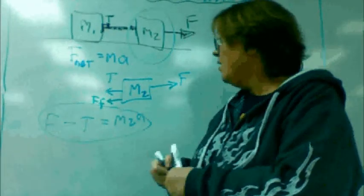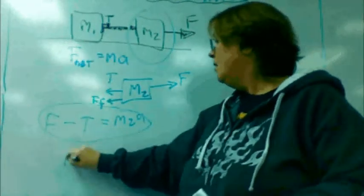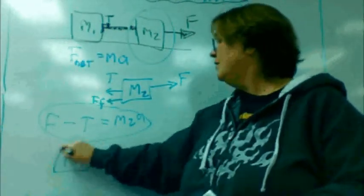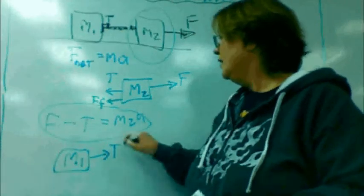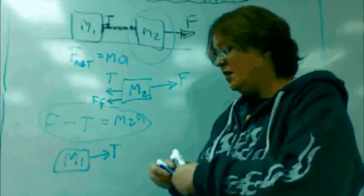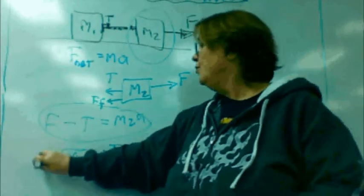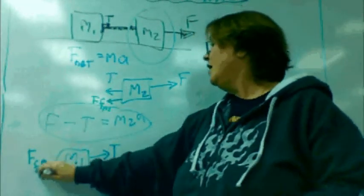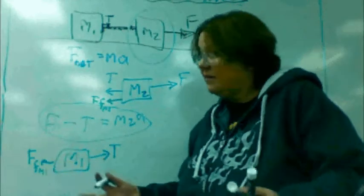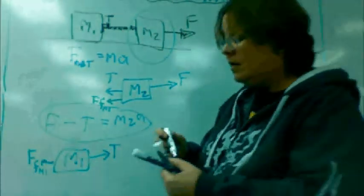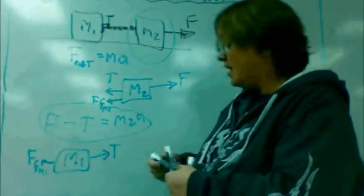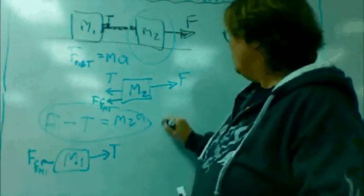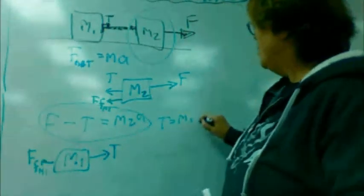We also have M1. All M1 is experiencing is a tension pulling it. If there were a friction, then that friction would pull back. Now these frictions will be different because the masses aren't necessarily the same. So let's save that thought. T equals M1A.